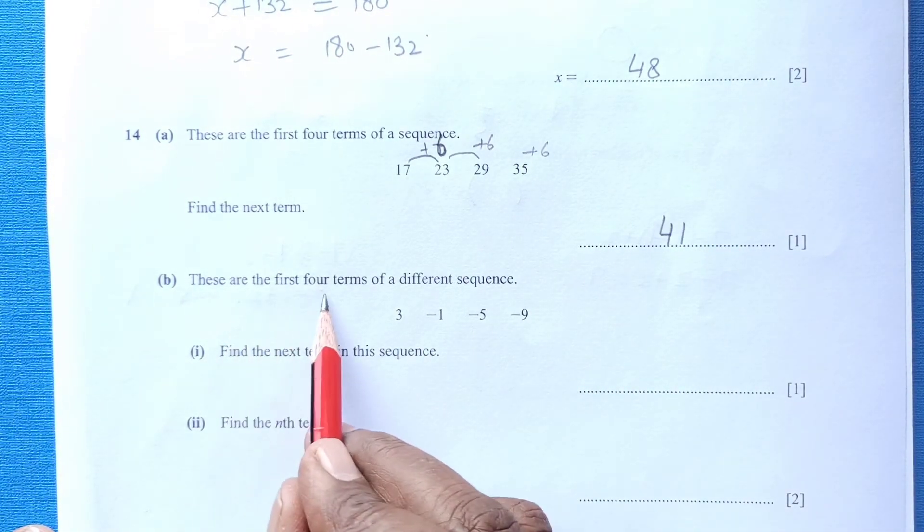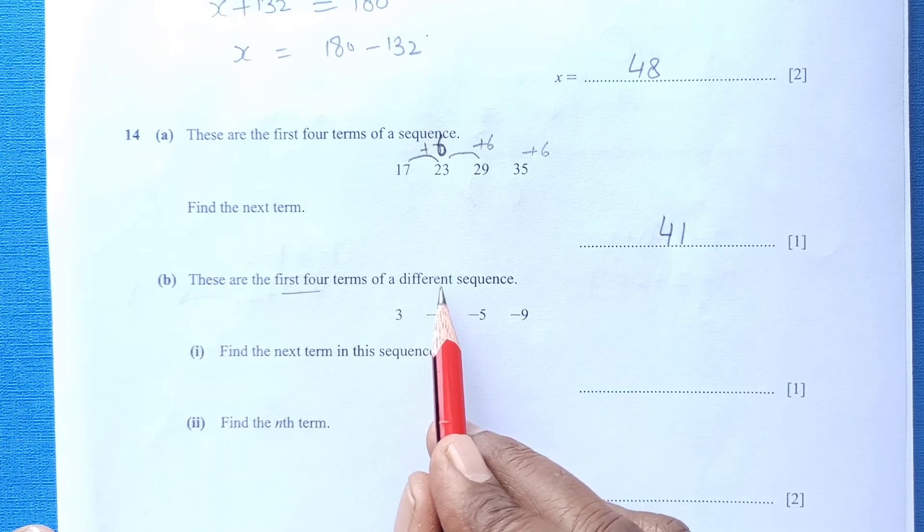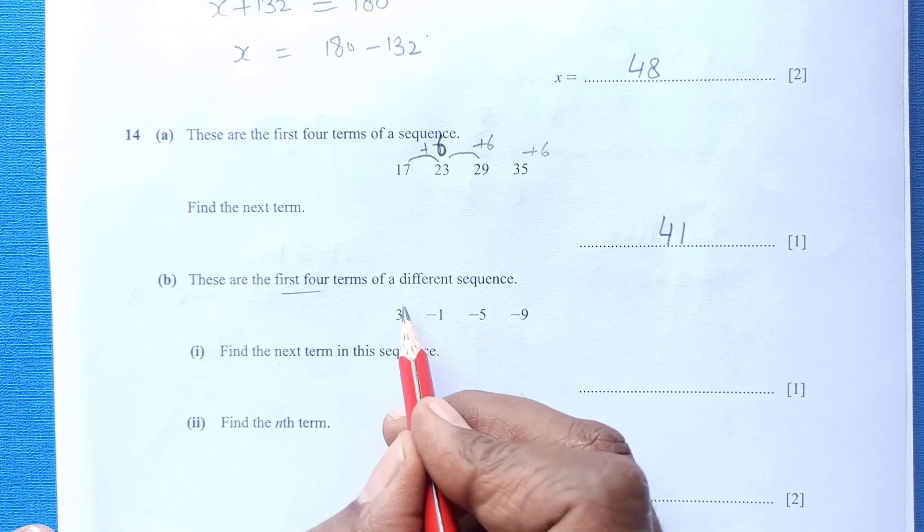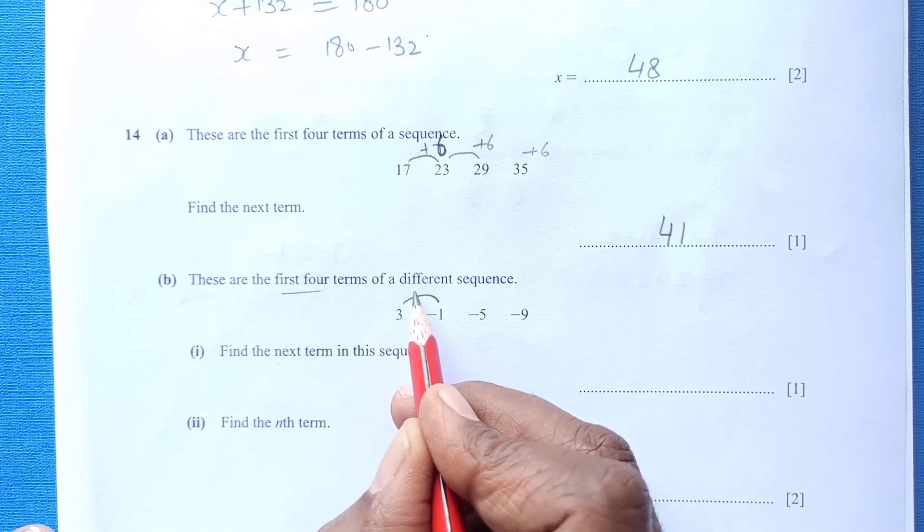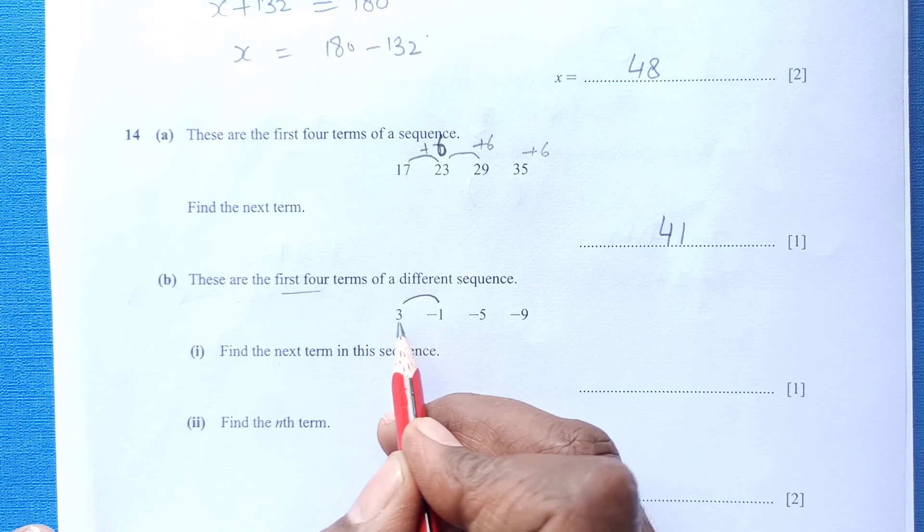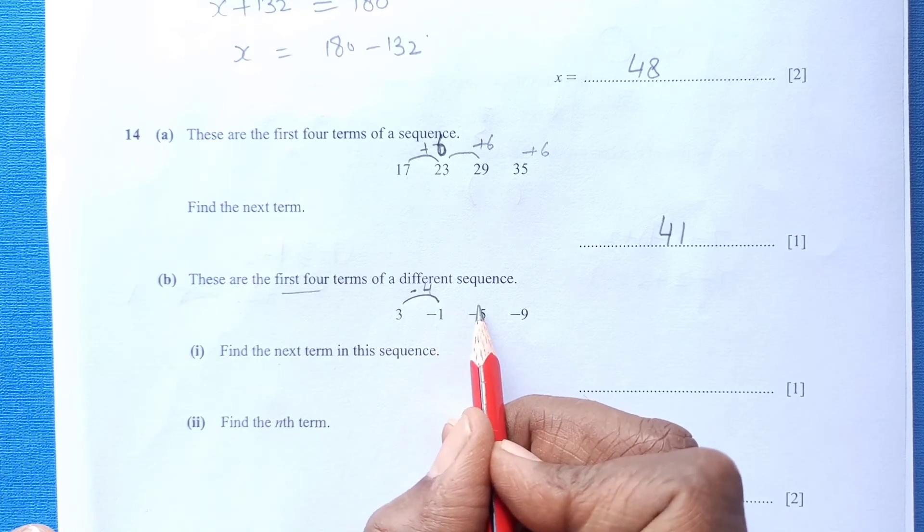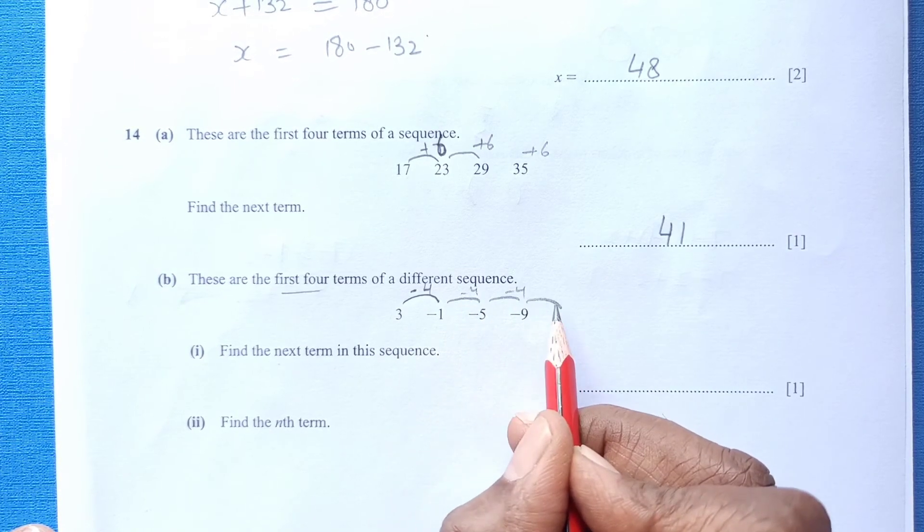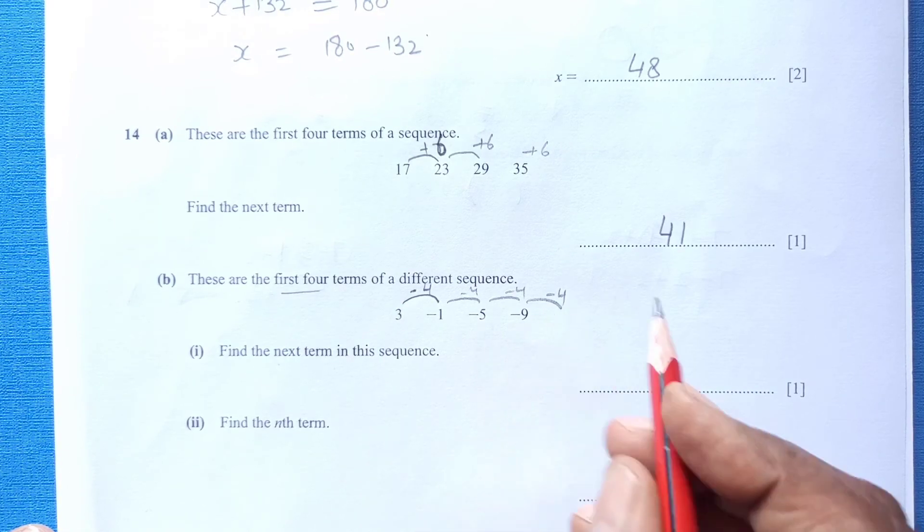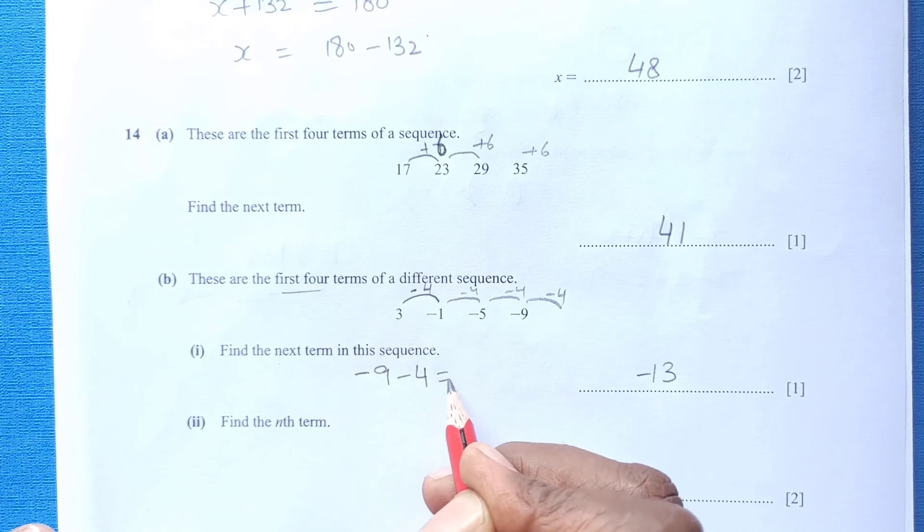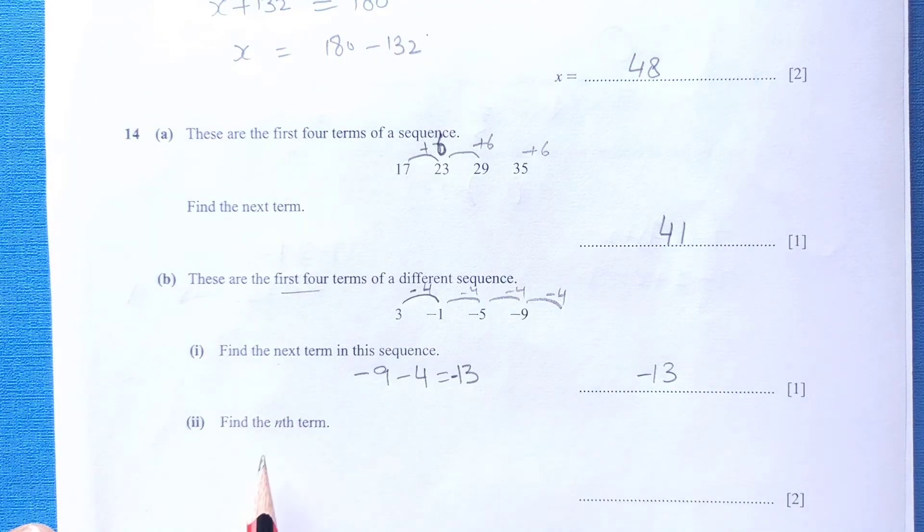These are the first four terms of a different sequence. Find the next term of this sequence. Again, we need to find out the difference. When you add here negative 3 minus 3, it is 4. Minus 4, when you subtract minus 4. Here you subtract minus 4, minus 4, then minus 4. This will be negative 13. Negative 9 minus negative 4, it will be negative 13.